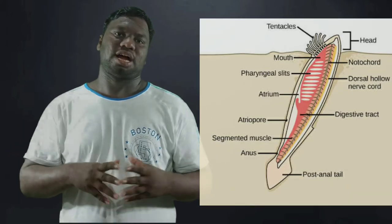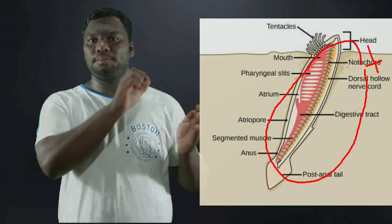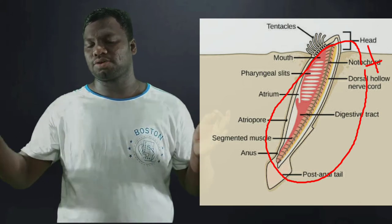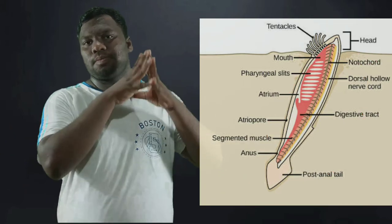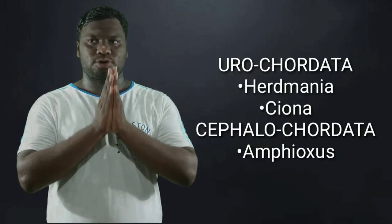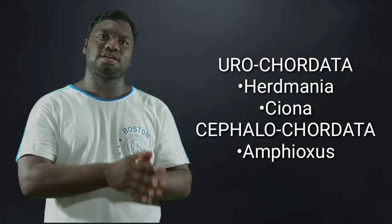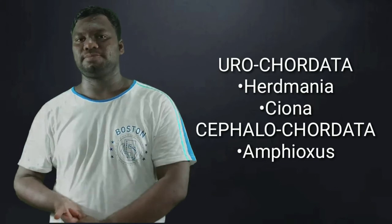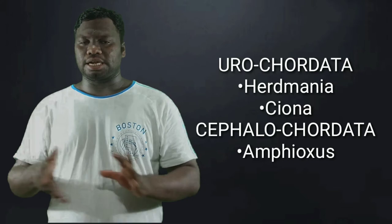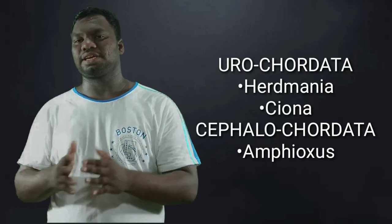Cephalo means head. In Cephalochordata, the notochord extends completely from head to tail. That is why it is called Cephalochordata. The example of Cephalochordata is Amphioxus, also known as Amphioxas.